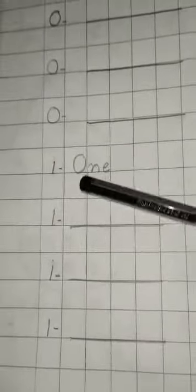Next, one, O-N-E-1. Again three blanks are there. You have to copy this spelling three times.